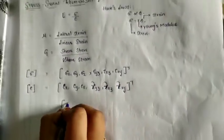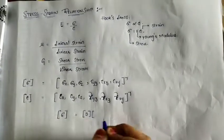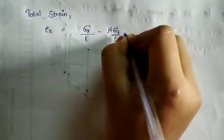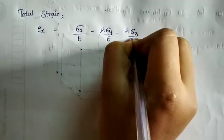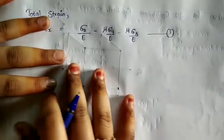In general, we write this in matrix form: sigma is equal to D into strain. The total strain formula — for example, the strain in the x-direction — comes from stress divided by Young's modulus.